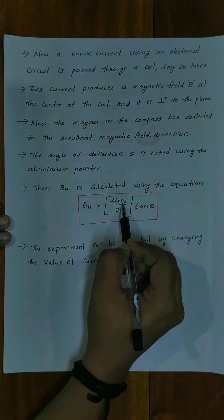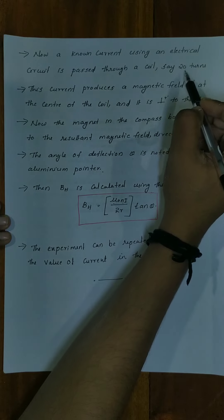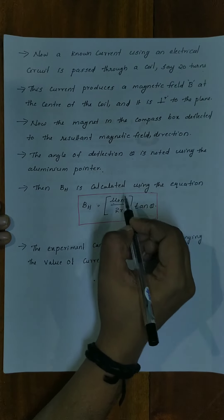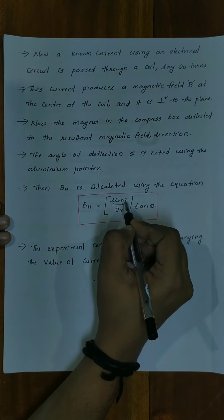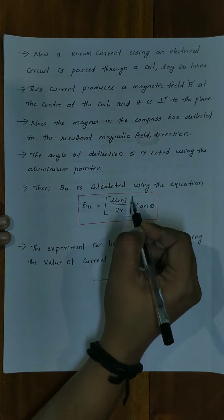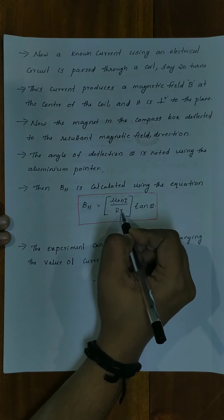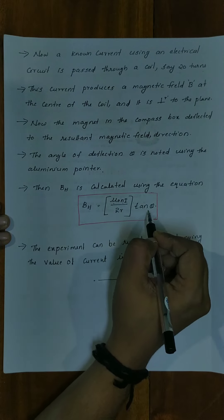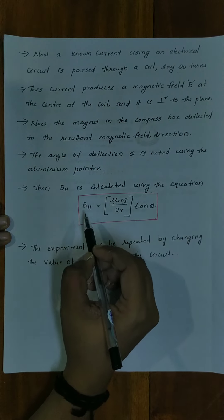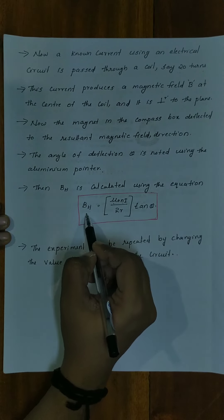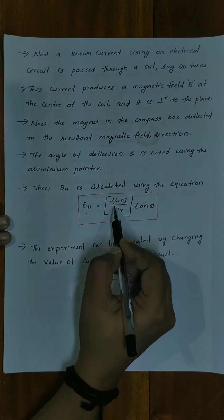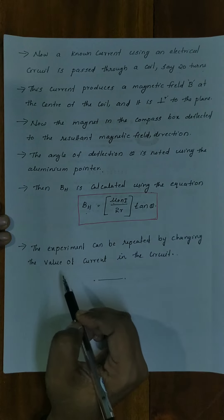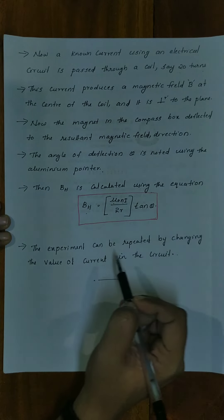Here N is the number of turns — we are using 20 turns. I is the current and R is the radius of the coil. We can find out the value of BH by the equation mu₀NI by 2R into tan theta. The experiment can be repeated by changing the value of current in the circuit.